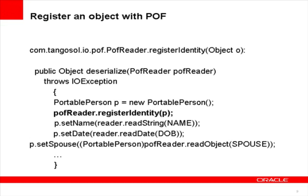Using the registerIdentity method in the PuffReader interface, a custom serializer that uses object references can register an object with Puff during deserialization after it creates the object. Given an object, Puff can find its identity and map the identity to this object. Later on, in deserialization, when Puff sees the object ID, it replaces it with the actual object.